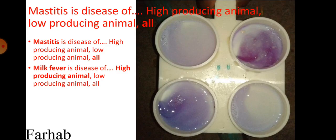Mastitis is a disease of all animals — both highly-producing and low-producing animals. Milk fever, on the other hand, is a disease of high-producing animals only. So milk fever is a disease of high-producing animals, whereas mastitis is the disease of all dairy animals.